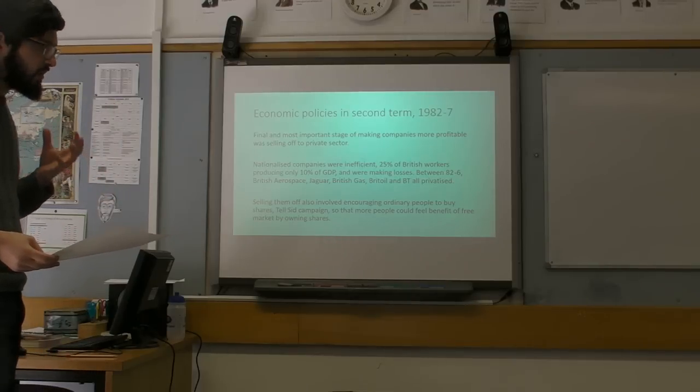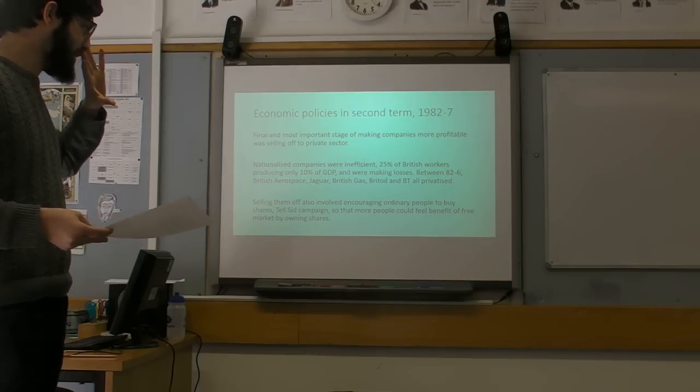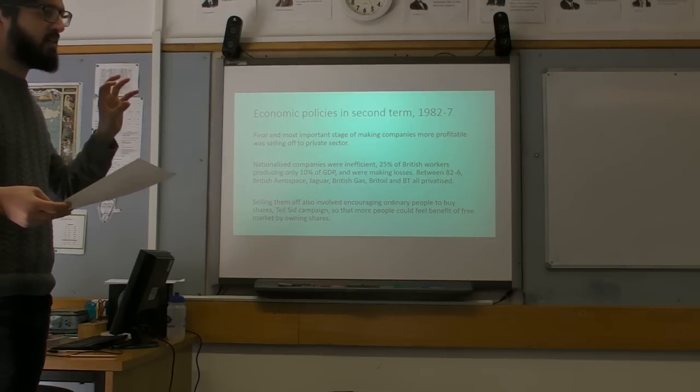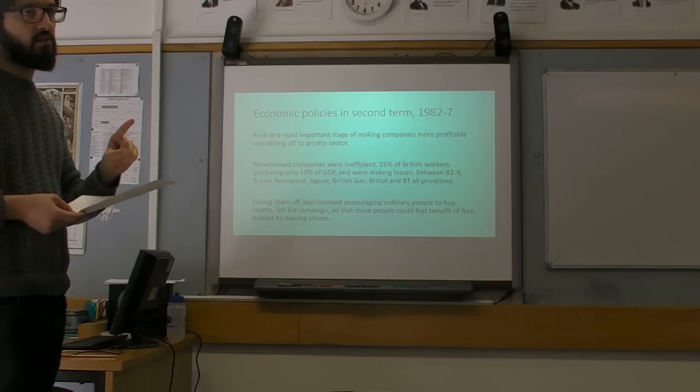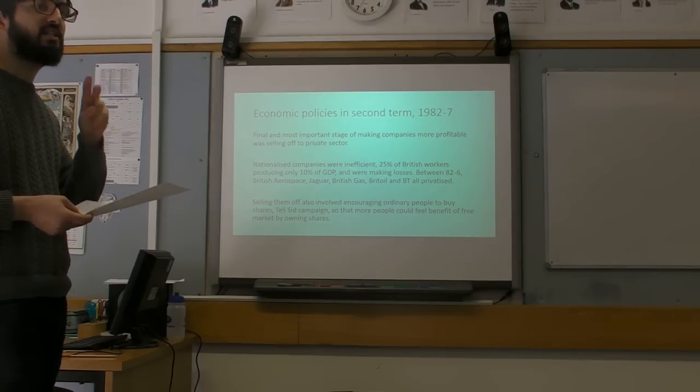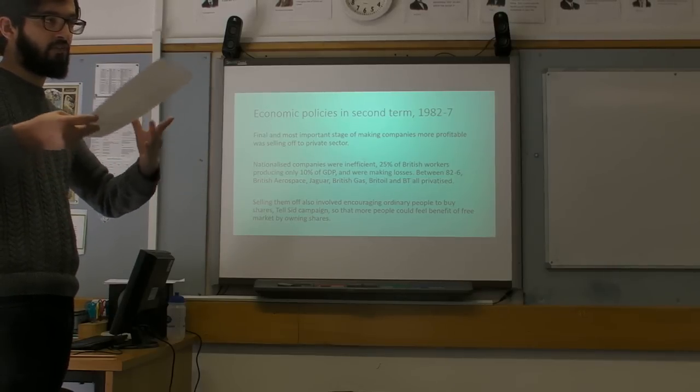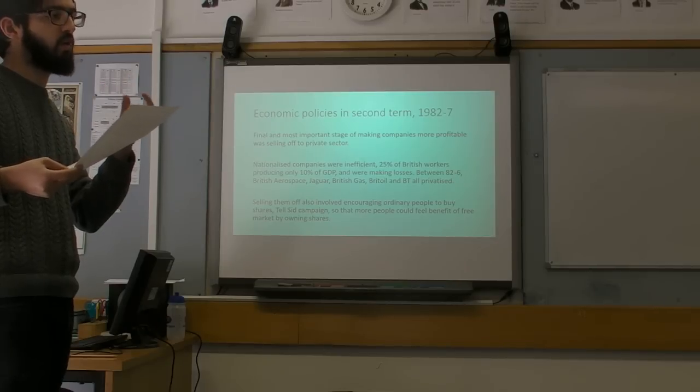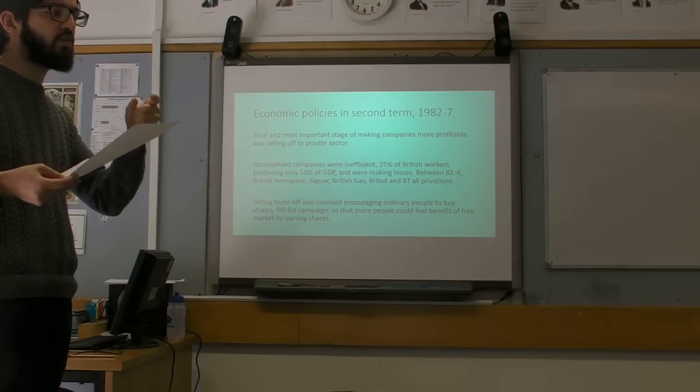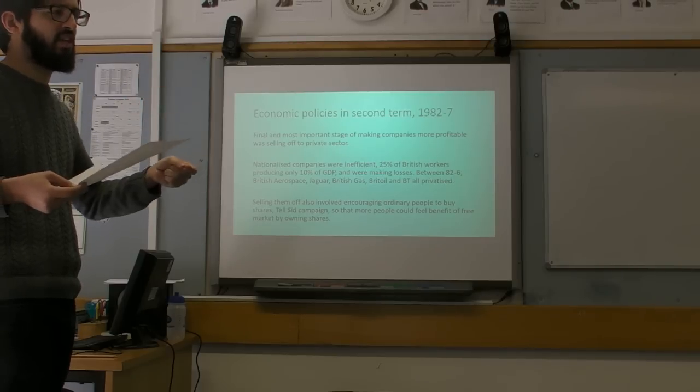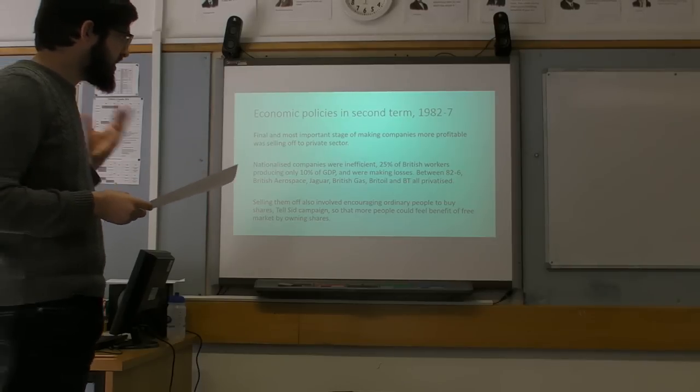She starts to privatise them. Nationalised companies were really inefficient. One quarter of British workers, the ones in nationalised industries, accounted for only 10% of GDP. So you've got a situation where they're actually not producing efficiently. So between 1980 to 1986, she embarks on a big privatisation campaign where she ends up selling off major industries like British Aerospace, Jaguar the car company, British Gas, Brit Oil and BT, British Telecoms, all being privatised.